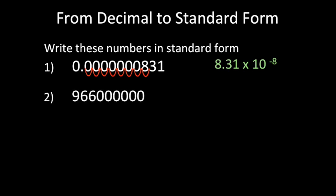Now let's look at a big number. For this one, the decimal point is at the end. This time we move from right to left. We stop at 9.66, because that is between 1 and 10. You cannot stop at 96.6 since it's not between 1 and 10. Let's count: 1, 2, 3, 4, 5, 6, 7, 8. So the number in standard form is 9.66 times 10 to the power of 8. That's how we write a decimal number in standard form.